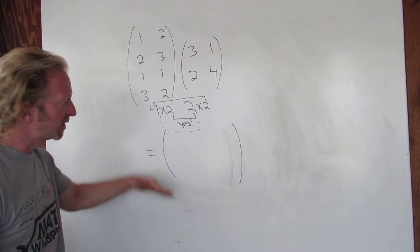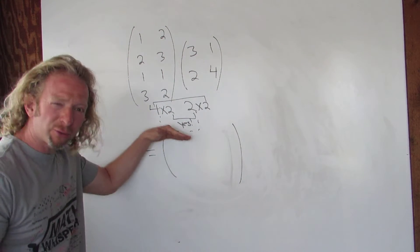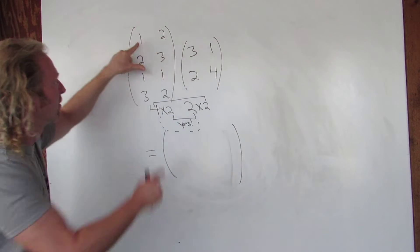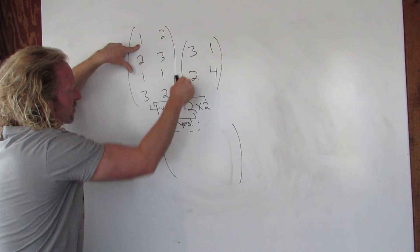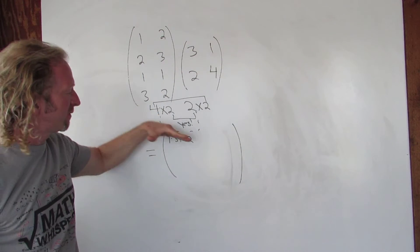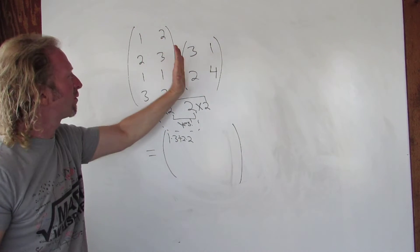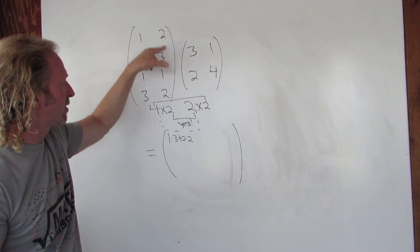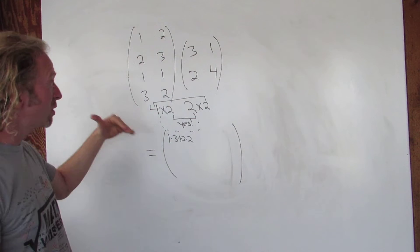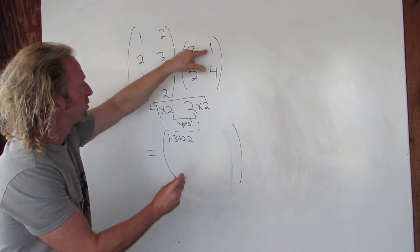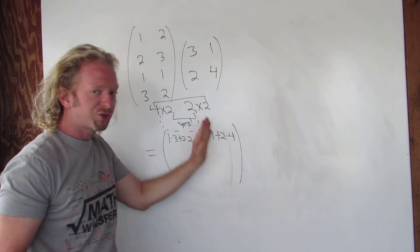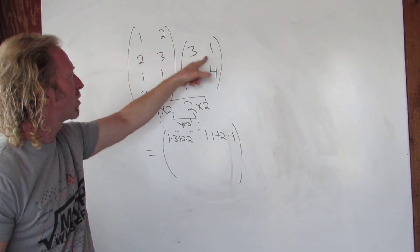So to find the entry in the first row, first column, we use the first row of the first matrix and the first column of the second matrix: one times three plus two times two. For the first row, second column, we use the first row and the second column: one times one plus two times four.